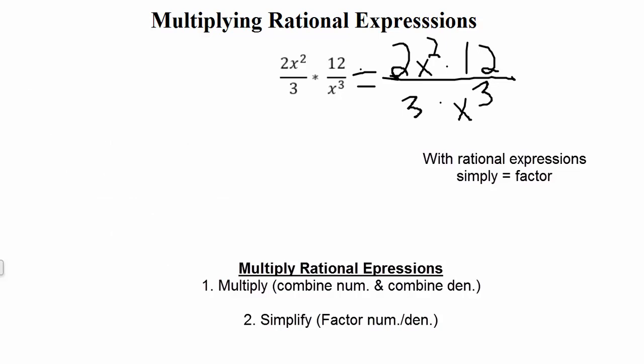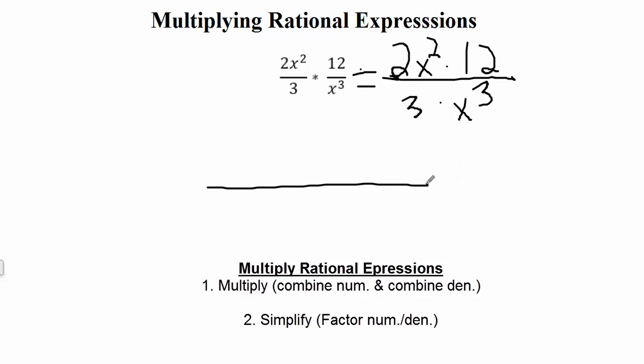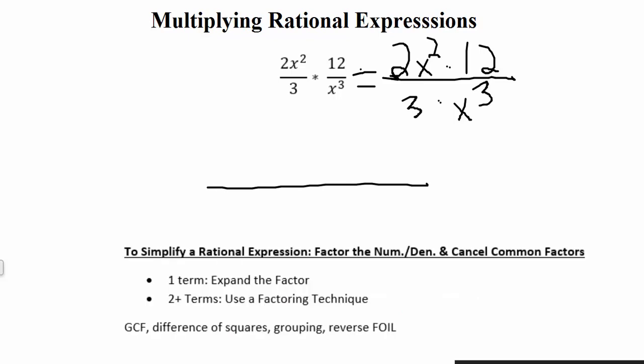Now we need to simplify. When it comes to rational expressions, simplifying means factoring, and factoring is typically breaking things apart. Instead of multiplying everything together, we keep them separated because we'll want to break them apart anyway. So let's look at our numerator and denominator and see how we can break them apart. Do we have one term or two or more terms?